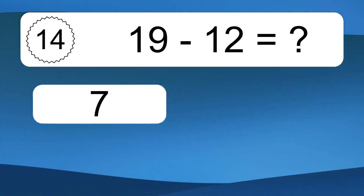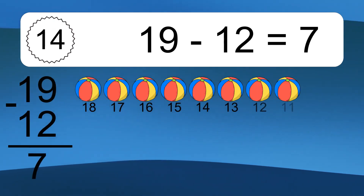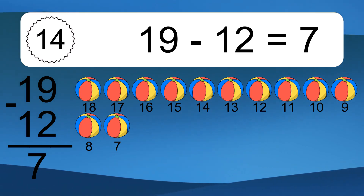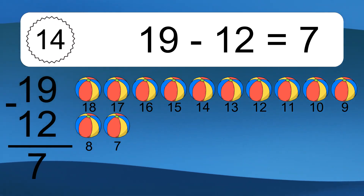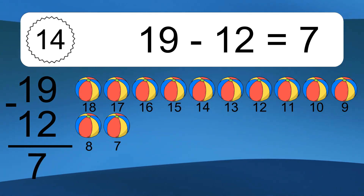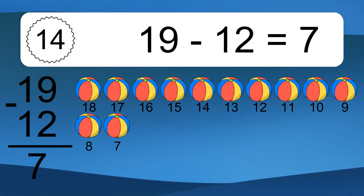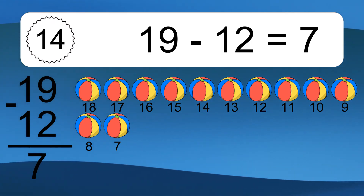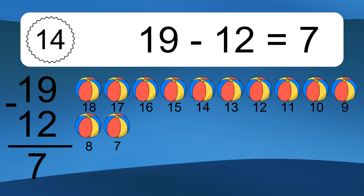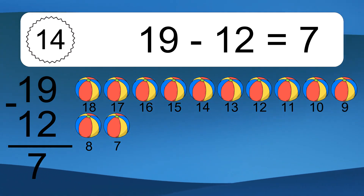11 minus 3 equals 8. Let's count it: 10, 9, 8. 19 minus 12 equals what? 19 minus 12 equals 7. Let's count it: 18, 17, 16, 15, 14, 13, 12, 11, 10, 9, 8, 7.